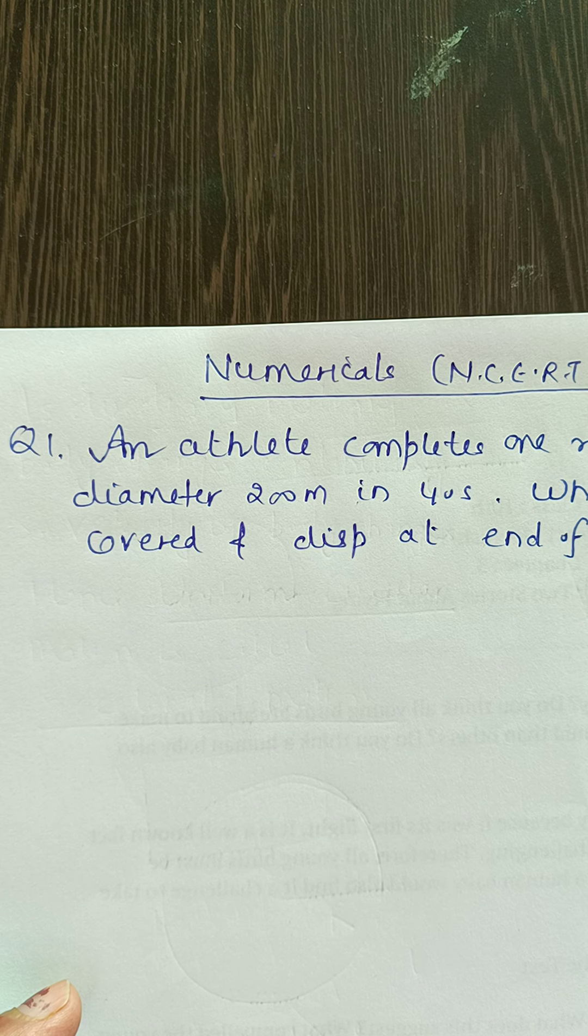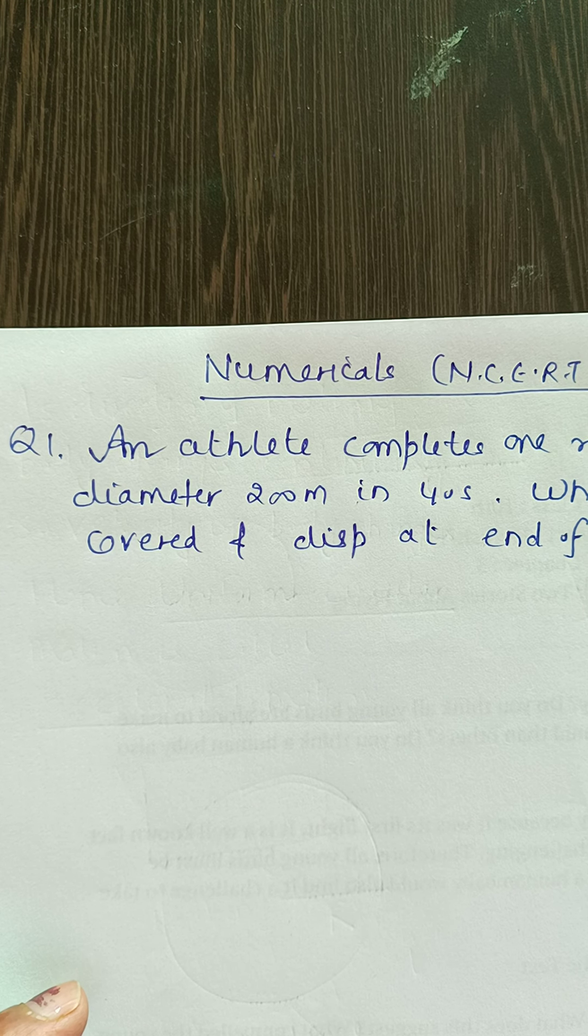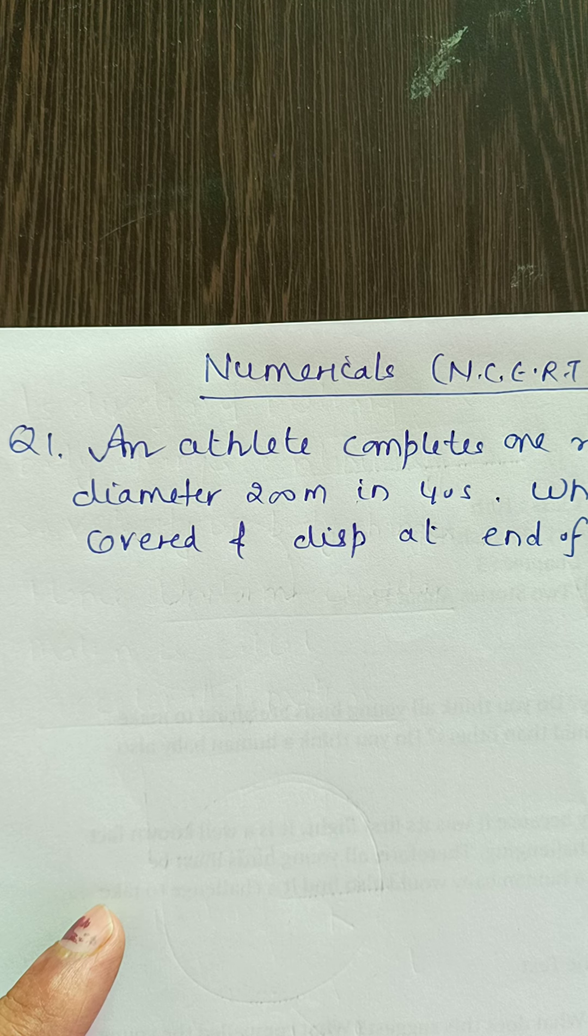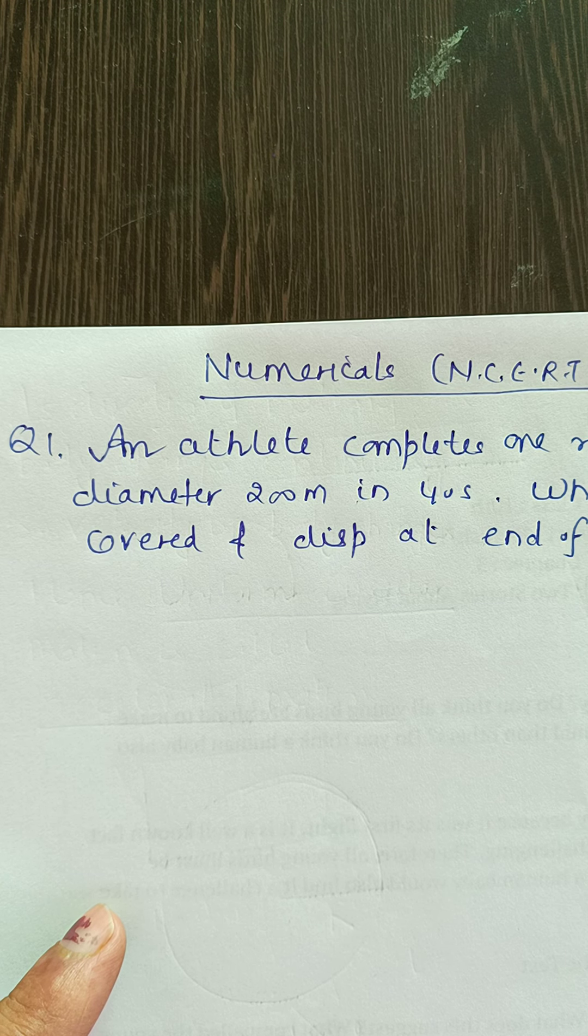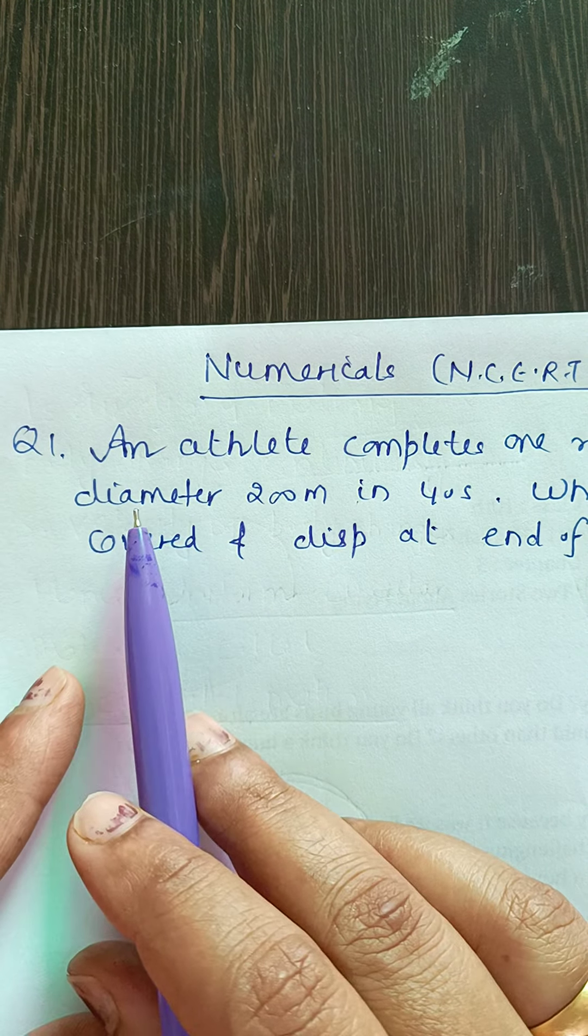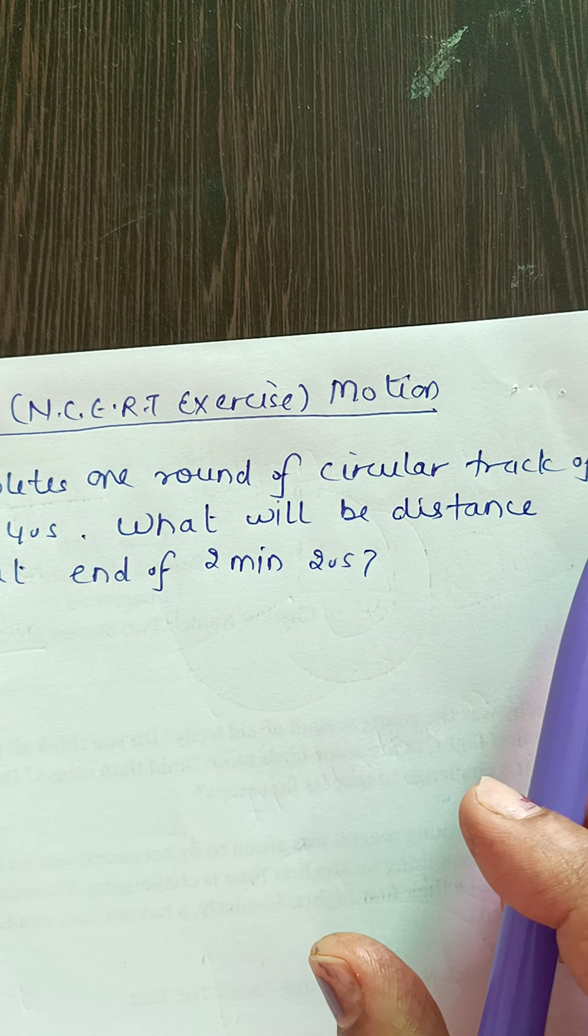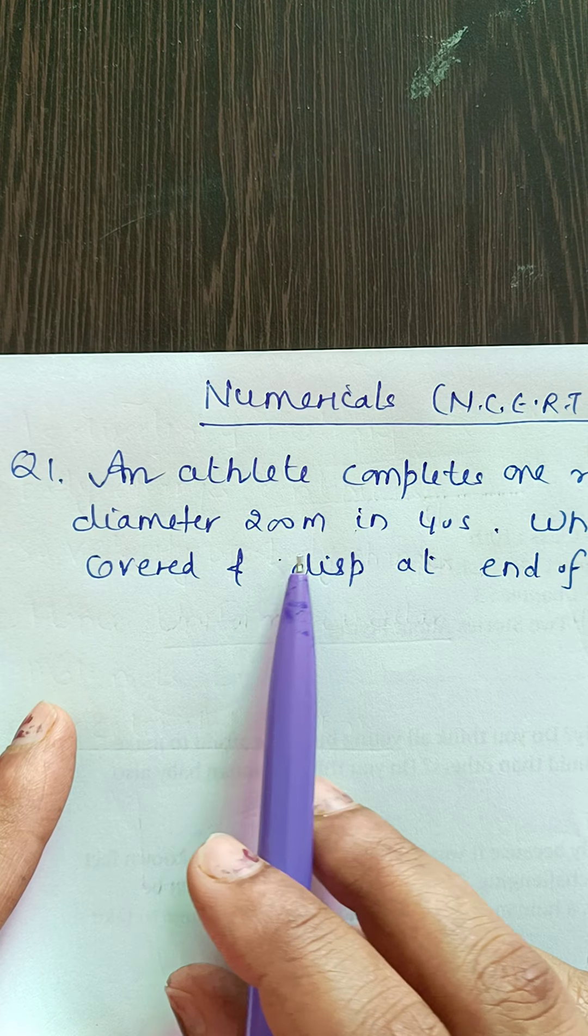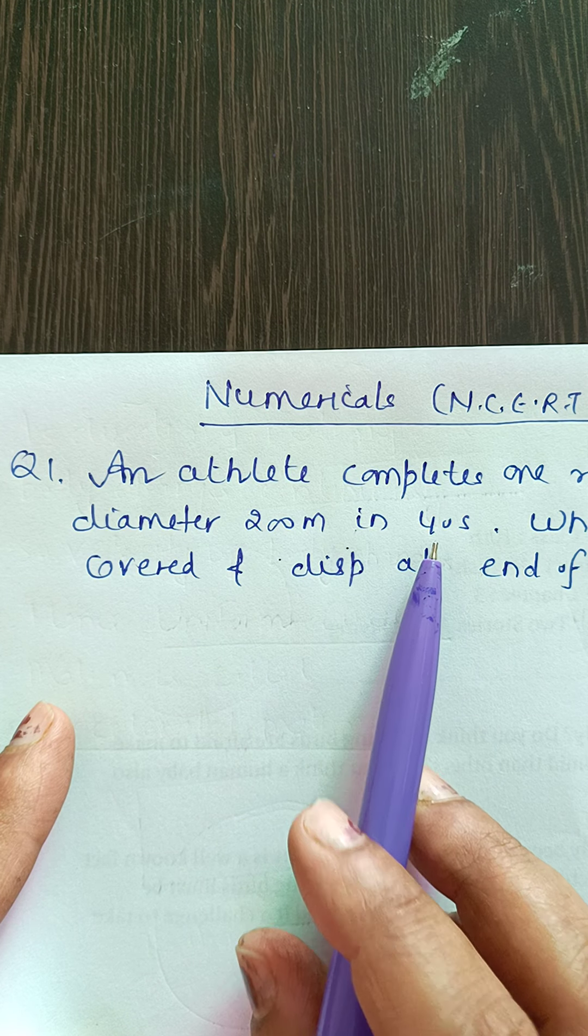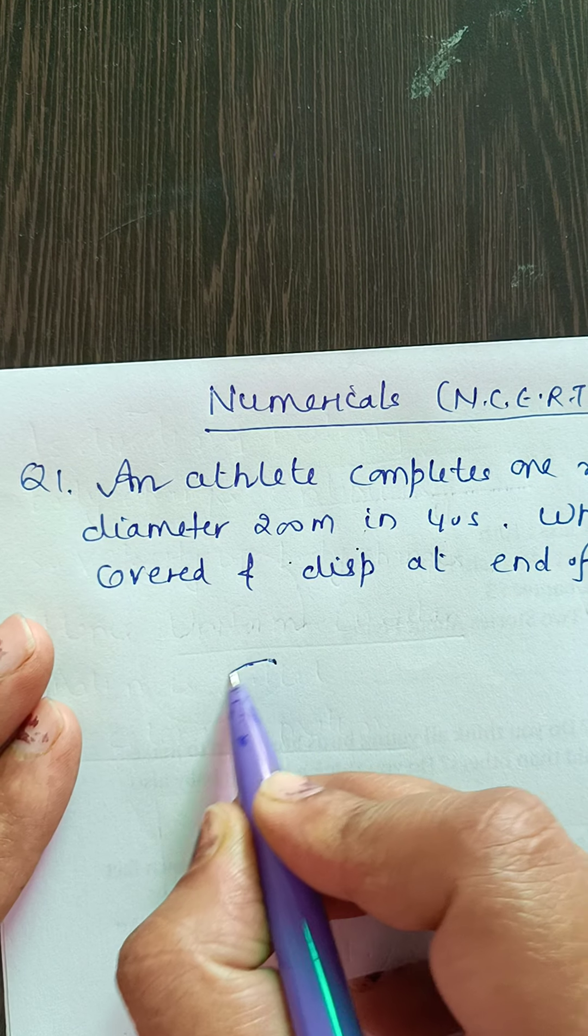Hello students, today we will discuss NCERT exercise of chapter motion. All the topics we have covered, so first question is an athlete completes one round of circular track of diameter 200 meter in 40 seconds.